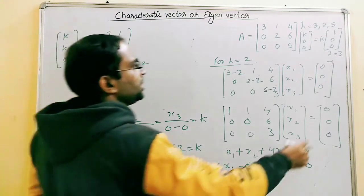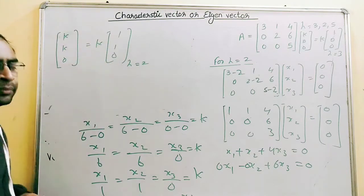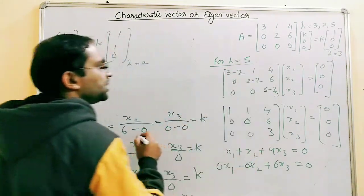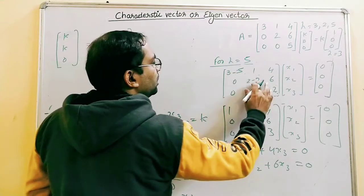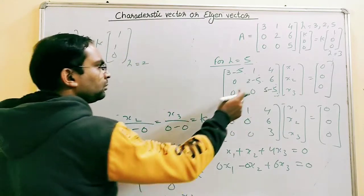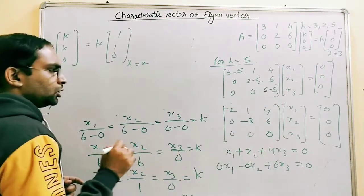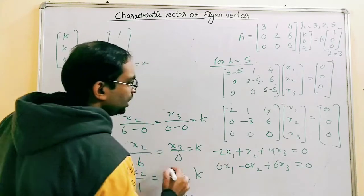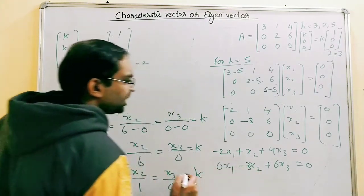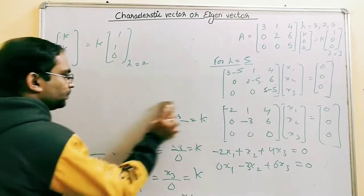So the eigenvector for lambda equals 3 is K[1, 0, 0], and for lambda equals 2 it is K[1, 1, 0]. Now for the last eigenvalue, lambda equals 5: replacing lambda with 5 gives 3-5=-2, 2-5=-3, 5-5=0. The two equations are -2X1 + X2 + 4X3 = 0, and 0·X1 - 3X2 + 6X3 = 0, which is again a trivial solution.